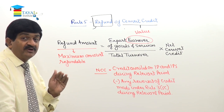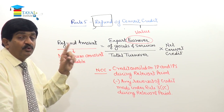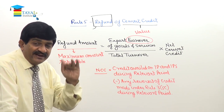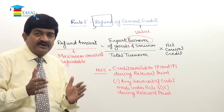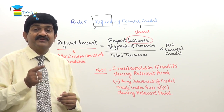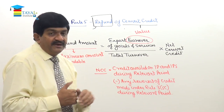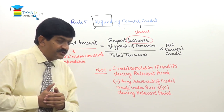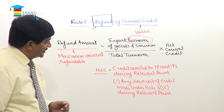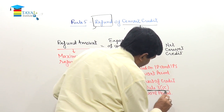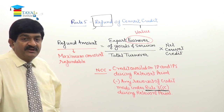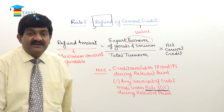The refund amount is computed as per the formula — it means maximum amount refundable. So either this amount or the credit on input and input services available on record, whichever is less, that much will be refundable. Export turnover is the value of goods or services actually exported during the relevant period, irrespective of when payment is received. Net CENVAT credit equals credit availed on inputs and input services during the relevant period minus any reversal under Rule 3(5C). So friends, this is rule number five of CENVAT Credit Rules.